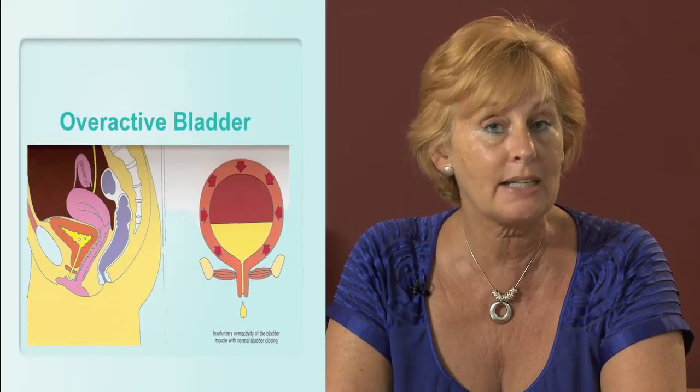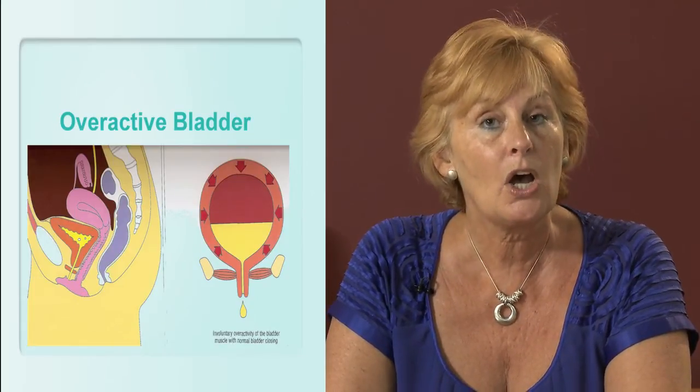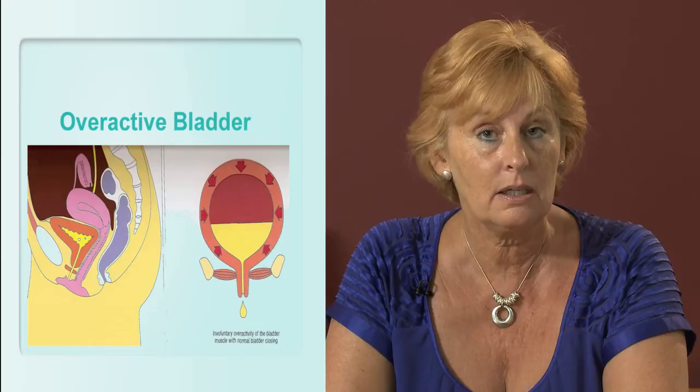The second type is urge incontinence, more commonly known now as overactive bladder. An overactive bladder is characterised by frequency and urgency — needing to get to the toilet quite quickly. There is also a related condition called detrusor instability, which gives similar symptoms and will be dealt with separately.